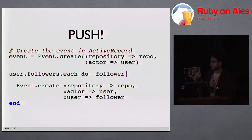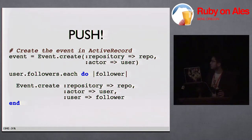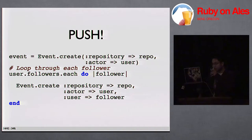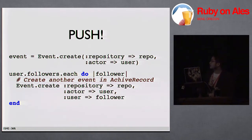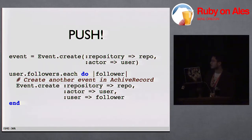So at GitHub, we do more of a push architecture where we create the event once and then basically pre-build everyone's feed. We create the event in ActiveRecord or whatever, then loop through each of the followers, and create basically another event in ActiveRecord. The difference in the two events: the first one only has the actor field filled out, and then the second one has the user field — the person that is watching the event. It's a really simple database layout, and the events table only has a few indexes on actor and user.